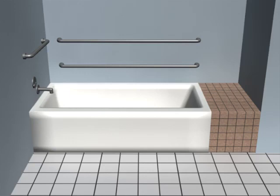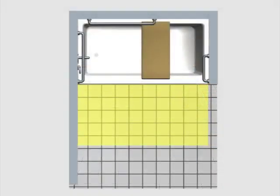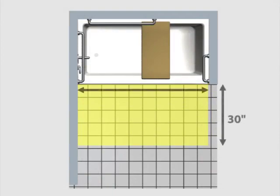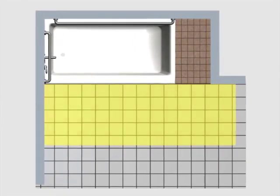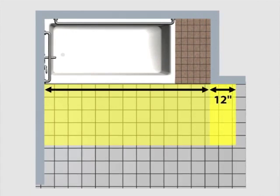The required clear floor space at tubs must be at least 30 inches wide and extend the length of the tub. If a permanent seat is provided, the clear floor space must extend at least 12 inches beyond the head end wall to allow proper positioning for transfer.